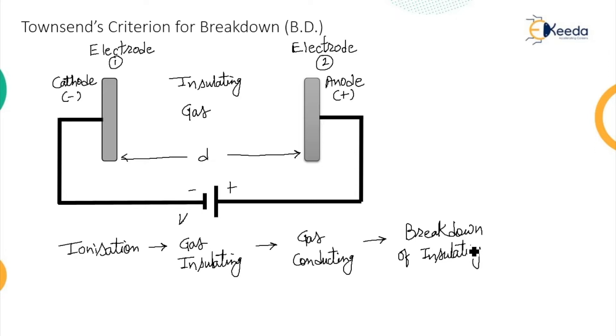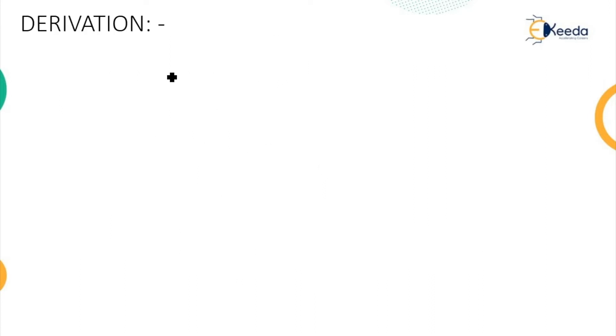Now we have to understand the criteria for breakdown, the criteria for the breakdown of that insulating gas. So let us do the derivation from the previous equation, first and second ionization coefficient. The current is given by...